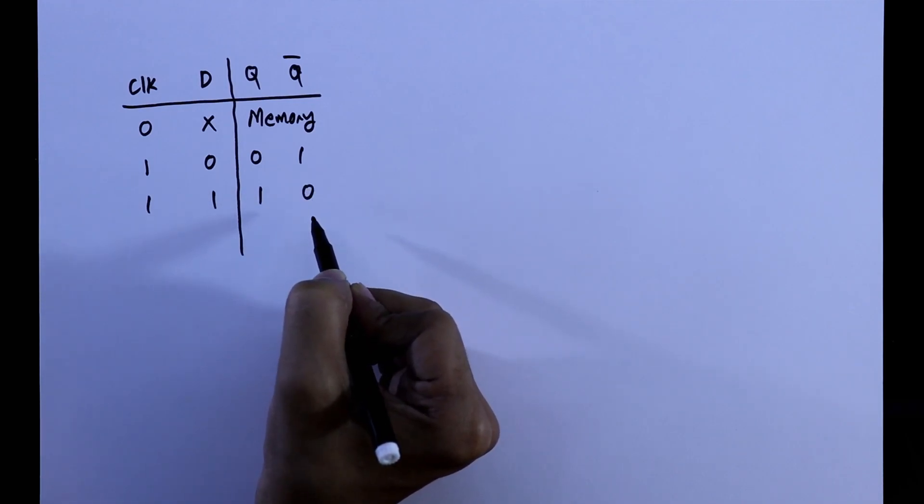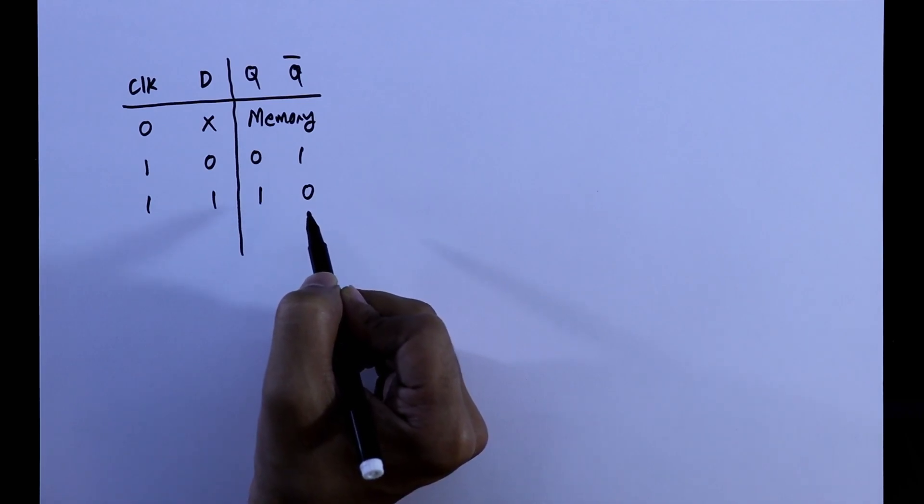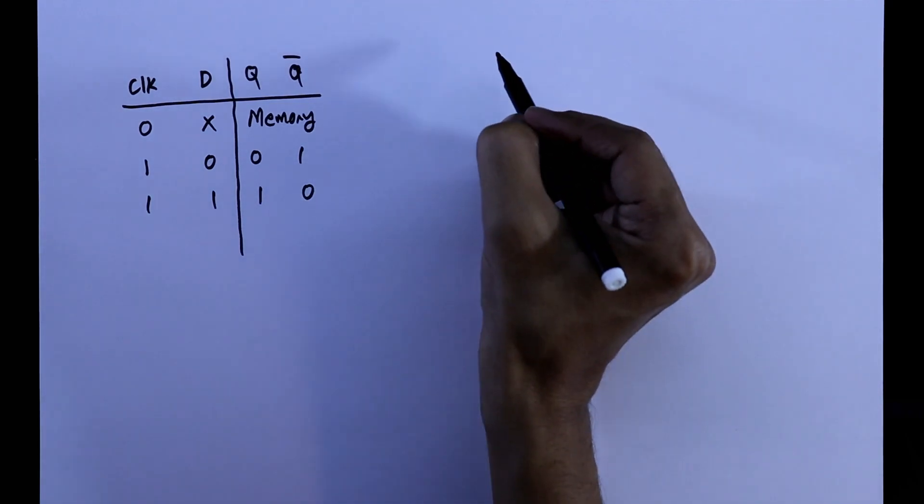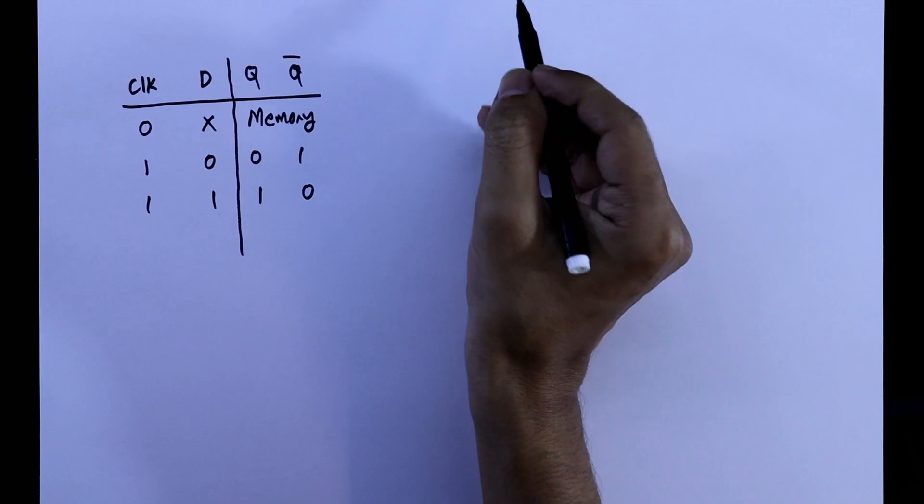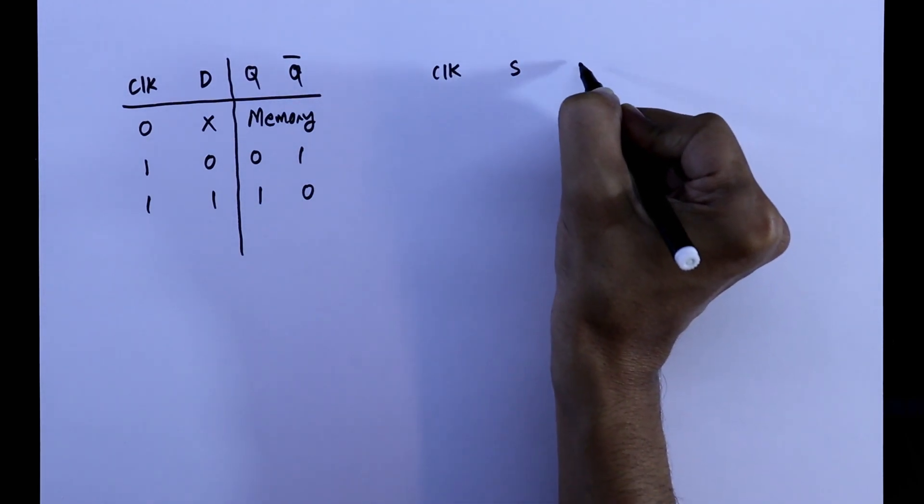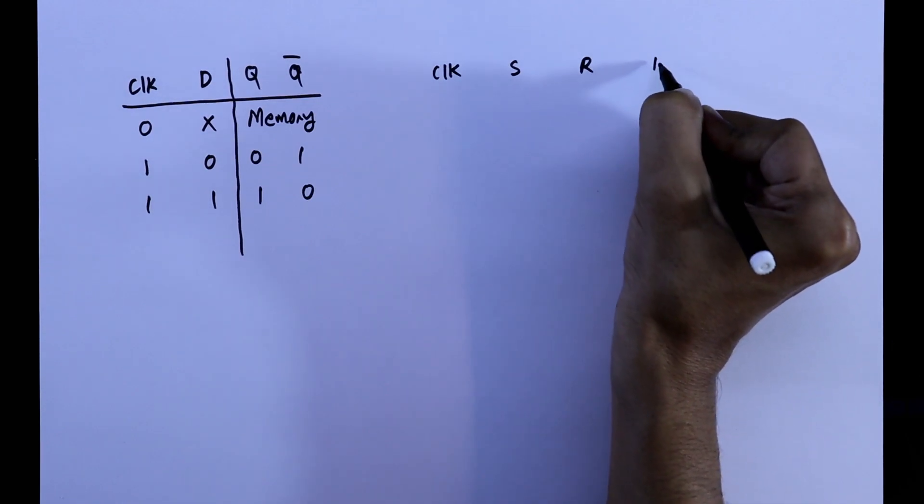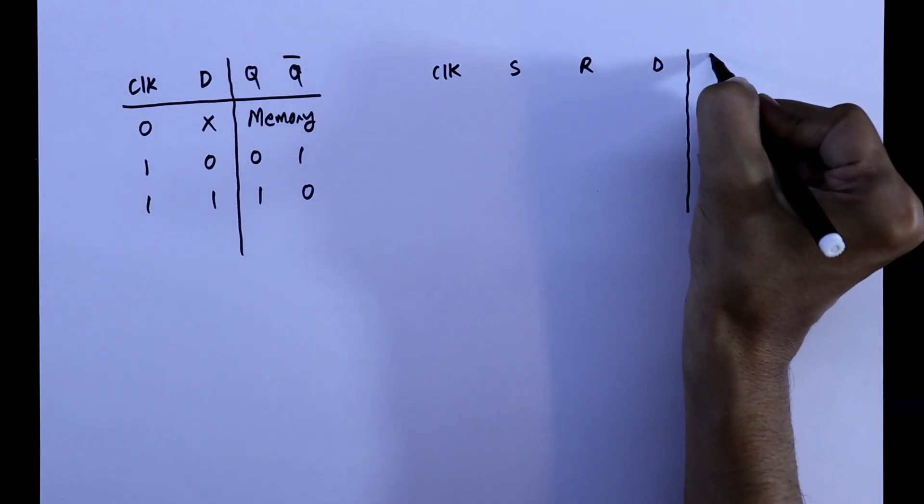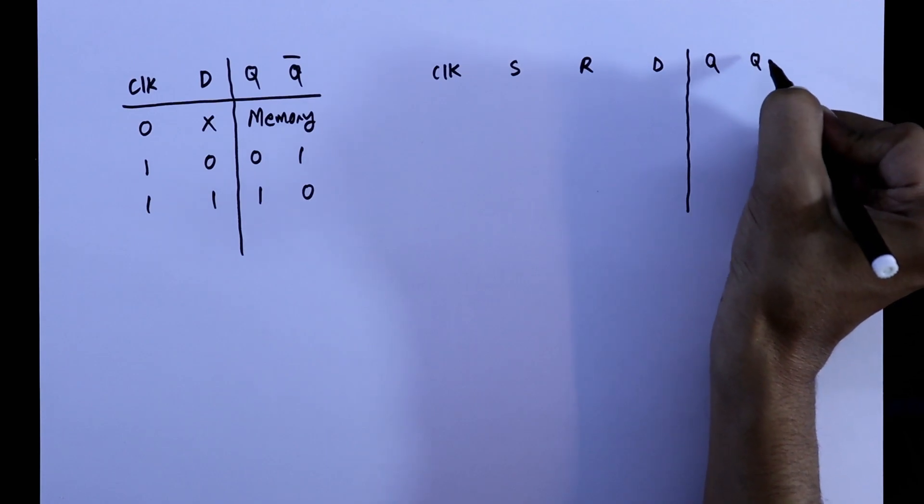So this is the D flip flop without set and reset. Now we will see the set reset. That is the IC, the 4 inputs will be clock, set, reset and data. And 2 outputs will be Q and Q bar.